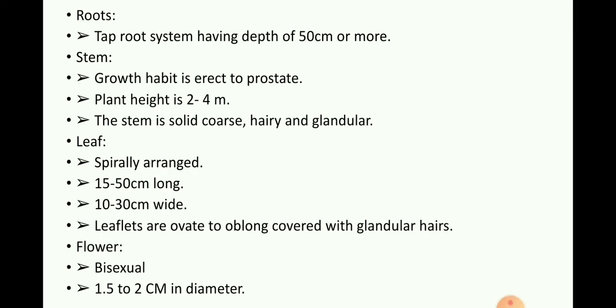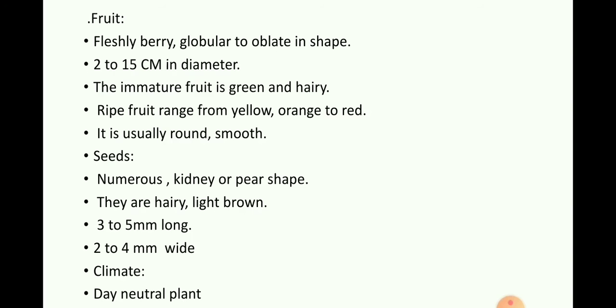Morphology — Roots: Taproot system with depth of 50 centimeters or more. Stem: Growth habit is erect to prostrate; plant height is 2 to 4 meters; the stem is solid, coarse, hairy, and glandular. Leaf: Spirally arranged, 15 to 50 centimeters long, 10 to 30 centimeters wide; leaflets are ovate to oblong, covered with glandular hairs. Flower: Bisexual, 1 to 1.5 centimeters in diameter, up to 2 centimeters. Fruit: The immature fruit is green and hairy; the ripe fruit ranges from yellow, orange to red, and is usually round and smooth. Seeds: Numerous, kidney or pear-shaped, hairy, light brown, 3 to 5 millimeters long, 2.5 to 4 millimeters wide.